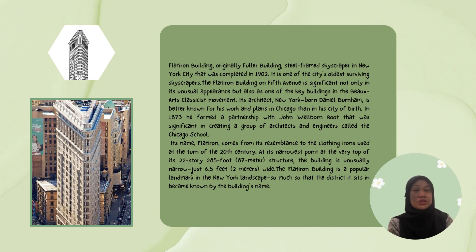Its name, Flatiron, comes from its resemblance to the clothing irons used at the turn of the 20th century. At its narrowest point, at the very top of its 285.87m height, the building is unusually narrow, just 6.5 feet wide. The Flatiron Building is a popular landmark in the New York landscape, so much so that the district it sits in has become known by the building's name.